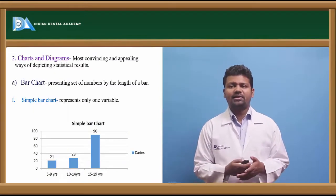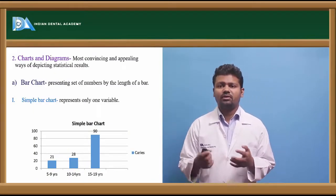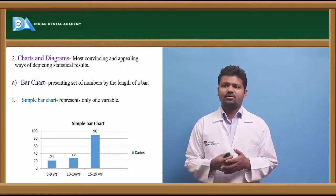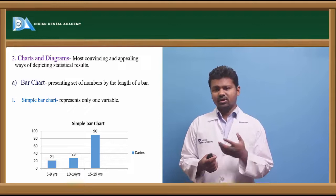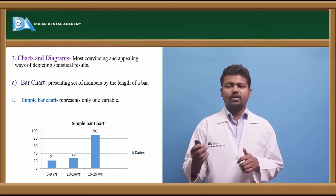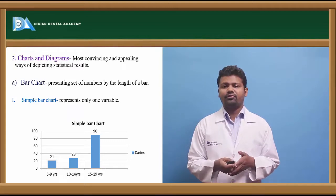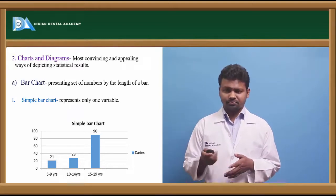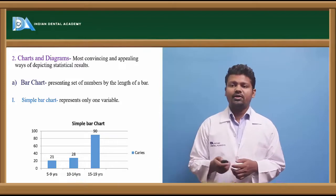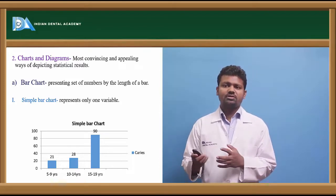Charts and diagrams are the most convincing and appealing ways of depicting statistical data. The simple bar chart uses single cylindrical-shaped bars. For example, in 5 to 9 years there are 21 cases of caries, whereas in 15 to 19 years there are 90 cases of caries.